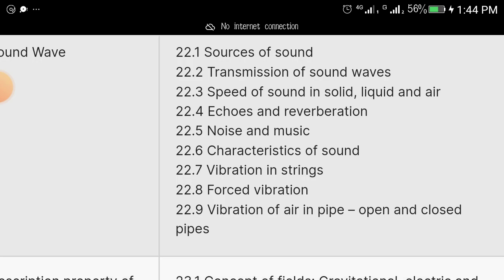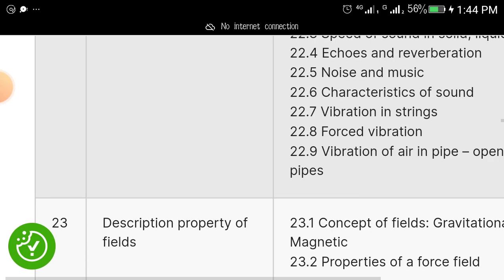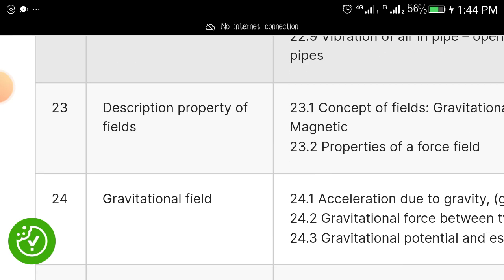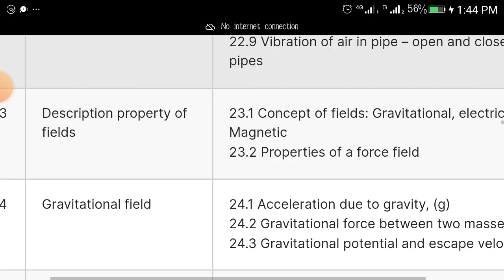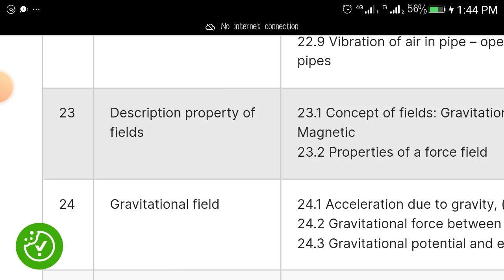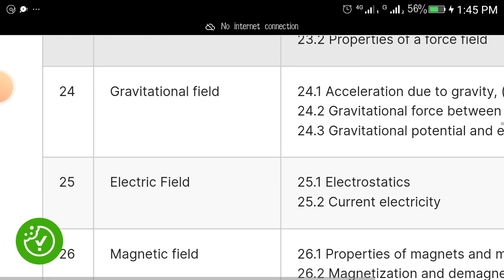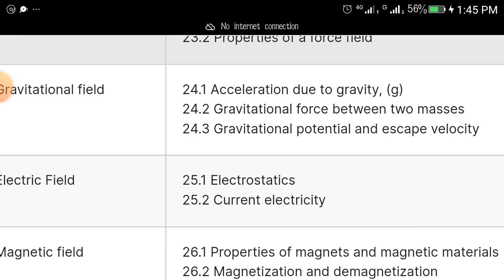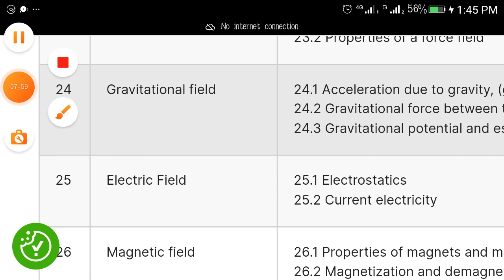Description and properties of field - concept of field, both gravitational field, electric field and magnetic field, properties of force field. Then we have gravitational field: acceleration due to gravity as a gravitational force between two masses, gravitational potential and escape velocity. So as you read, pay attention to this thing.